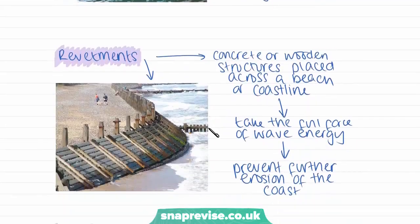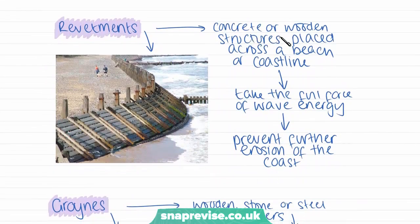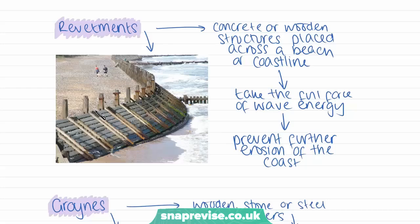Revetments are typically concrete or wooden structures placed across a beach or coastline. They take the full force of wave energy — waves crash onto the structures and are stopped from reaching the beach behind, reducing coastal erosion. The waves hit the wooden boards and return to the sea without eroding anything further.